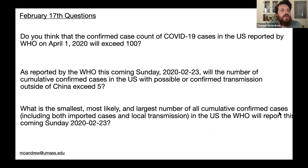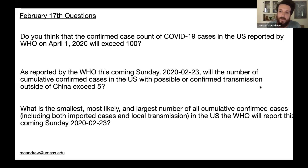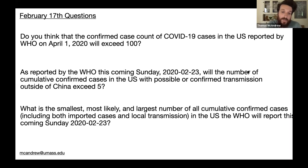Here are three questions from the February 17th survey. First: do you think the confirmed case count of COVID-19 in the U.S. reported by WHO on April 1st will exceed 100? Second: as reported by the WHO on February 23rd, will the number of cumulative confirmed cases in the U.S. with possible or confirmed transmission outside of China exceed five? Third: what is the smallest, most likely, and largest number of all cumulative confirmed cases, including imported and local transmission in the U.S., that the WHO will report on February 23rd?